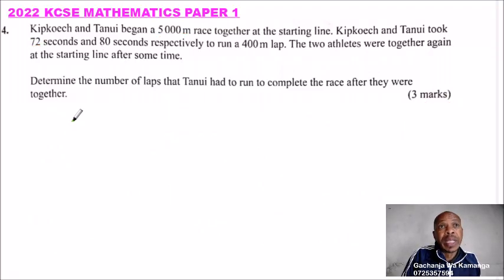This is question number 4, 2022 KCSE Mathematics Paper 1. We are told Kipkoech and Tanui began a 5,000 meter race together at the starting line. Kipkoech and Tanui took 72 seconds and 80 seconds respectively to run a 400 meter lap. The two athletes were together again at the starting line after some time. Determine the number of laps that Tanui had to run to complete the race after they were together and you get three marks.